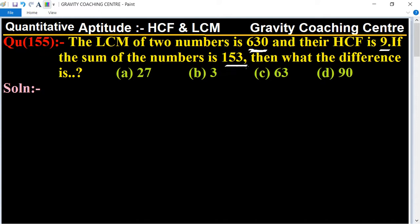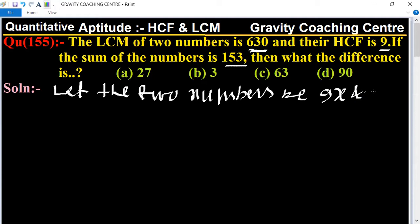their sum is also given as 153. So first of all, we let the two numbers be 9x and 9y. LCM equal to 630. Now we find the LCM of these numbers: 9x into 9y, so its LCM is 9 into x into